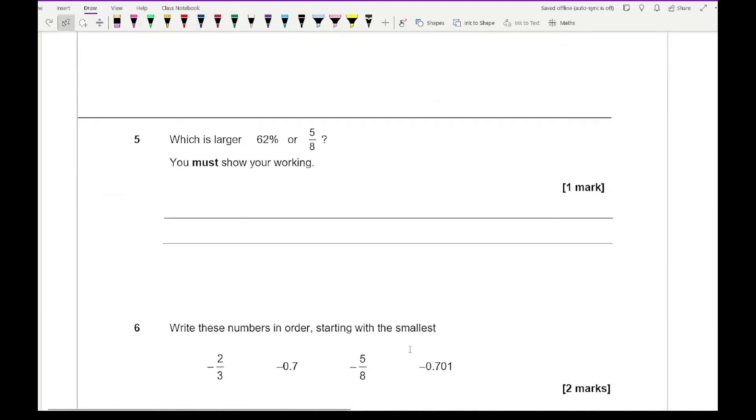Moving on to question 5, which is larger, 62% or 5/8? What we want to do is convert them both into decimals. So this is 0.62, and 5/8, well that's 8 into 5, let's stick a few zeros in there. 8 into 5 none, carry the 5, that goes into 6 remainder 2, that goes into 2 remainder 4, so it's 0.625. Which of these is larger? It's going to be 5/8.